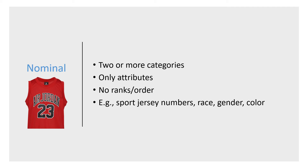Nominal variables are variables that have two or more categories and only have attributes without ranks or order. Examples include sport jersey numbers, race, gender, or color. For example, green is not higher or better than red, and jersey number one is not better or less skilled than jersey number two.